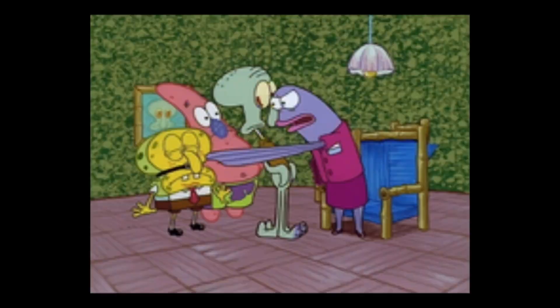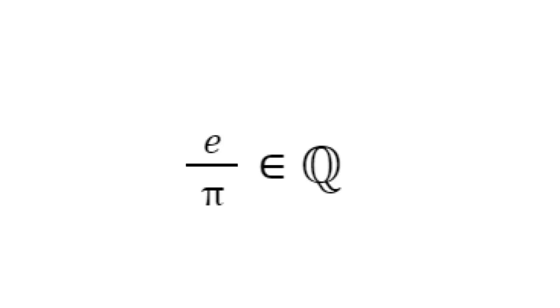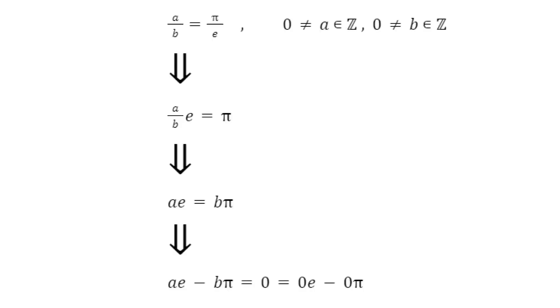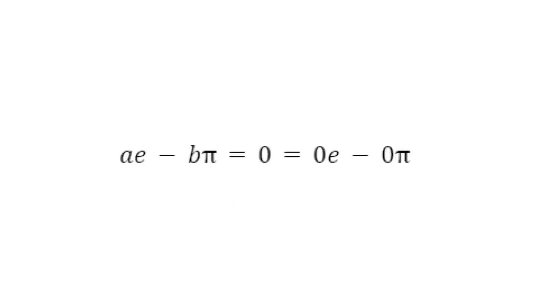And it turns out the opposite deduction is also true. If e over pi was a rational number, then we can deduce that the following equation is true, which means that 0 could be written as a linear combination of pi and e in two different ways.